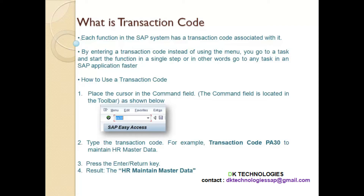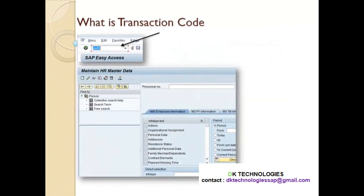Let me explain with an example. How to use the transaction code: you place the cursor in the command field, which is located in the toolbar shown up here. You enter a transaction code such as PA30, then hit enter, and the result screen gives you the task of maintaining the master data. It was very quick because it was just a single step — you just enter PA30 and hit enter.